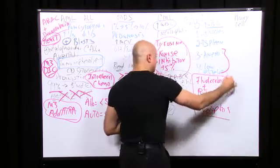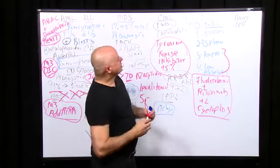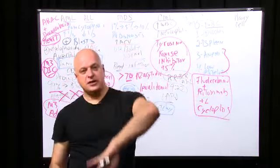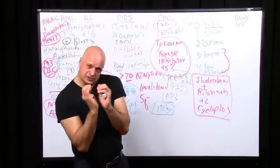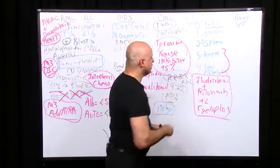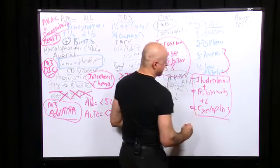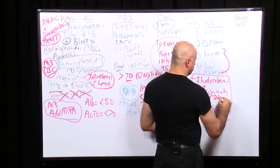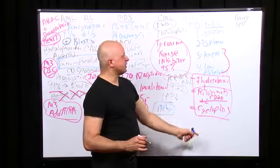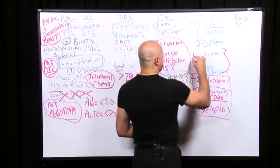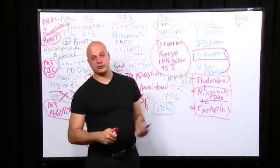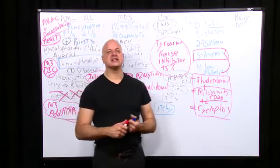CLL starts to look like lymphoma management — because CLL is really a 'liquidy lymphoma' and lymphoma is a solid CLL. Rituximab, the anti-CD20 drug, is used in lymphoma, rheumatoid arthritis, and sometimes ITP. Cyclophosphamide may also be used. If you have anemia from autoimmune hemolysis (which CLL can cause), steroids can help in 6 hours. But stage 3 CLL with bone marrow involvement — survival is one to two years.